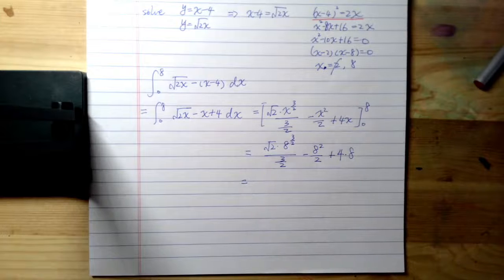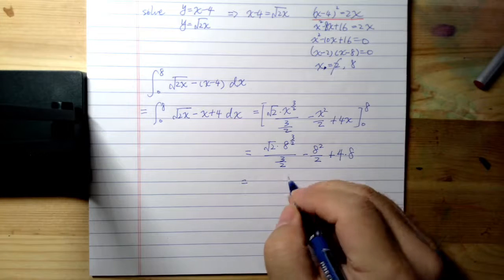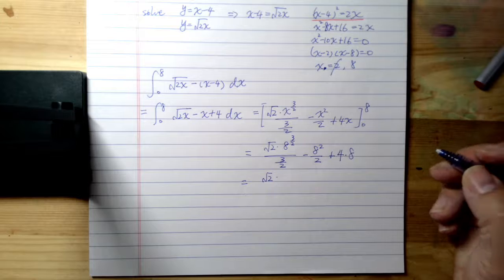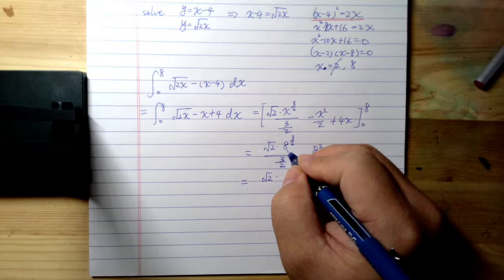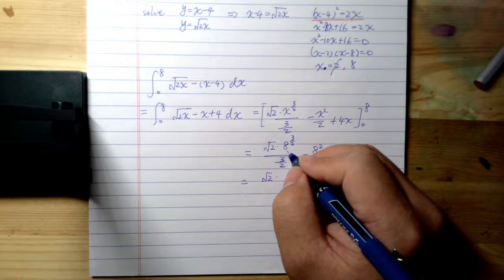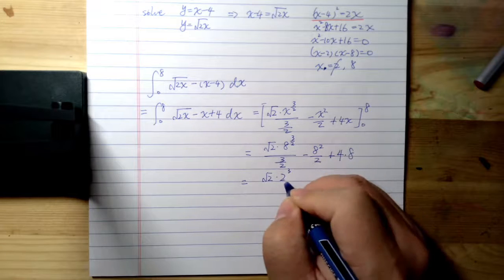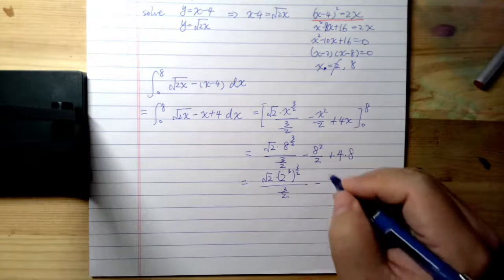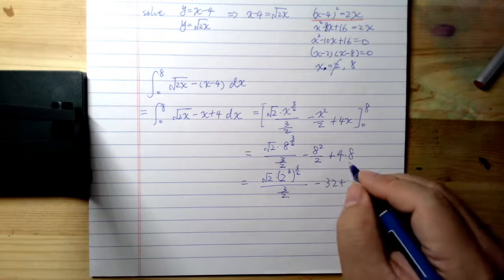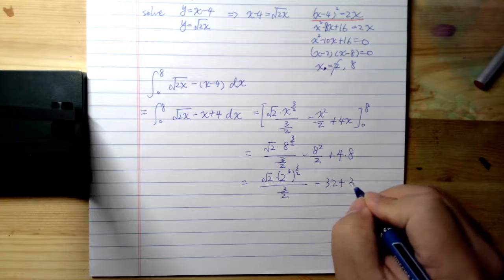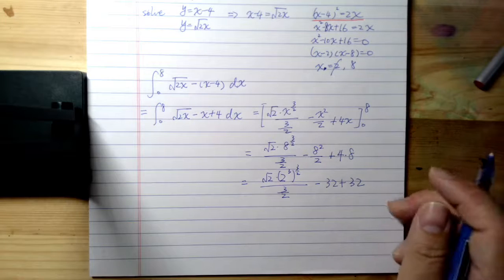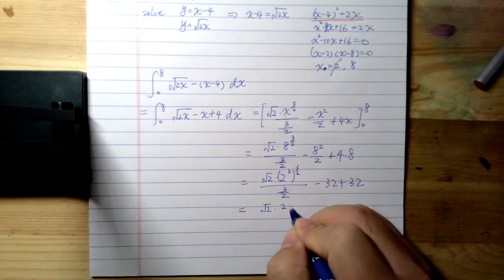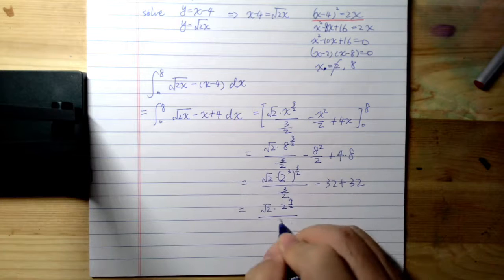Well, it turns out we're going to have square root of 2. Here you're going to have 8 equals 2 cubed, right? So it's 2 cubed, then it's to the power of 3/2, and still let's have 3/2 here, minus 64 over 2 is 32, plus 4 times 8 is still 32. So it turns out those two cross out. So we have square root of 2 here, we have 2 to the power of 9/2, we have 3/2.